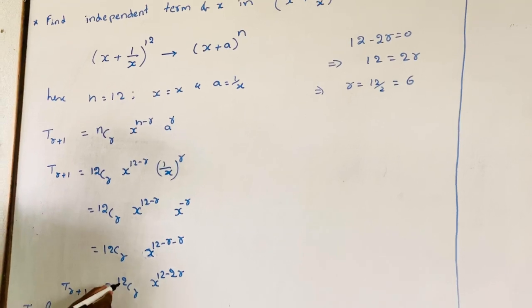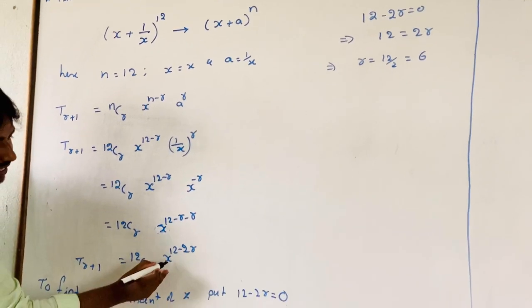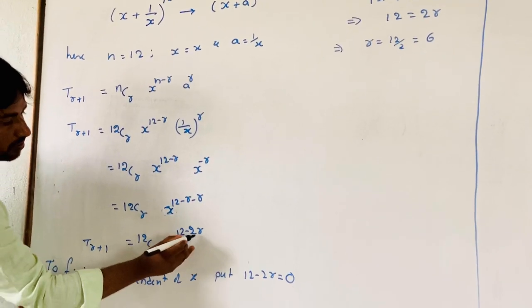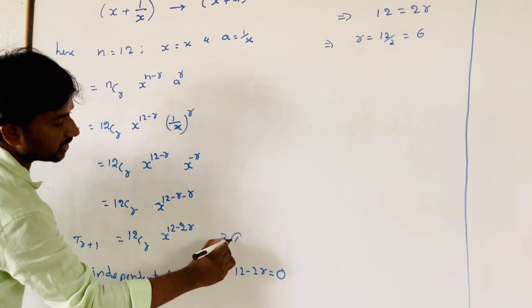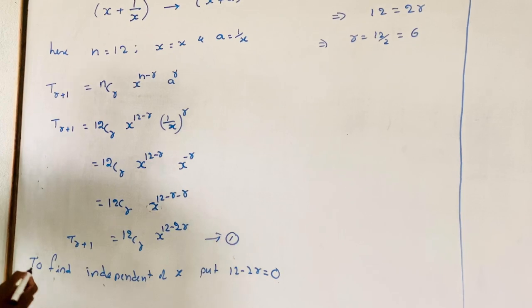So T(r+1) = 21Cr · x^(21−2r). This is equation 1.